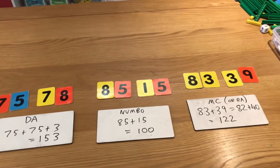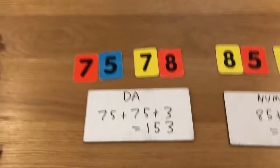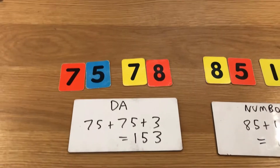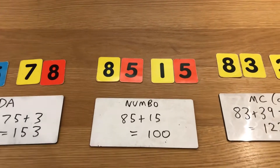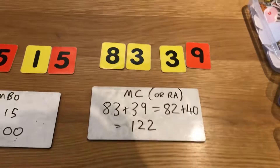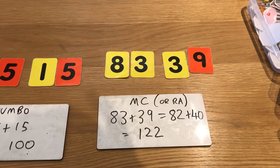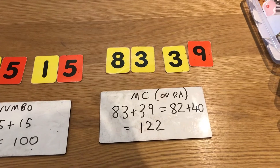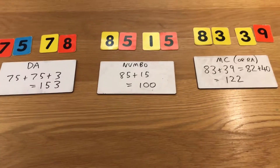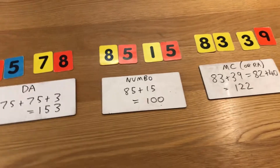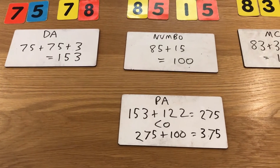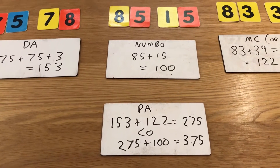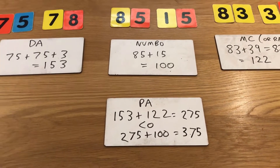There are lots and lots of ways we could have played around with these numbers. I started off with the 75 and the 78 — name the strategy: double and adjust. Double 75 plus 3 is 153. There was then a very lucky number bond: 85 plus 15 got us exactly to 100. Then MC: 83 plus 39, pass one over, 82 plus 40, that got us to 122. Looking at the three numbers now, I spotted a very straightforward partition: 153 and 122 — 100 and 100 is 250, add 20 is 270, 3 and 2 is 5, giving 275.